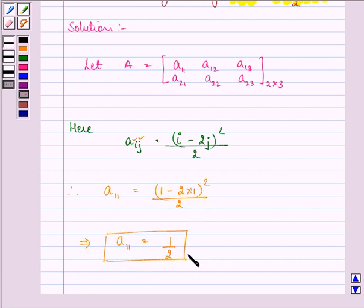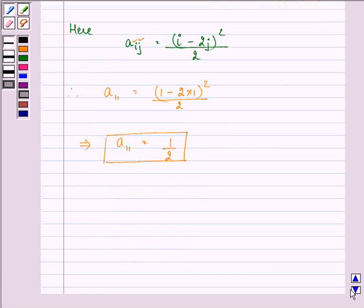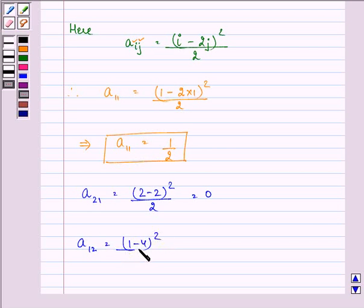Now in the same manner we will be finding out A21 which will be equal to 2 minus 2 the whole square divided by 2 which is equal to 0. Then we have A12 which is 1 minus 4 the whole square divided by 2 which gives us 9 by 2.